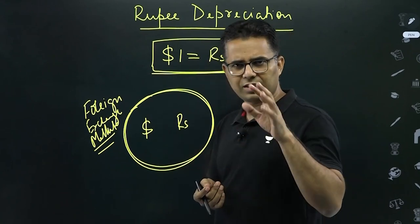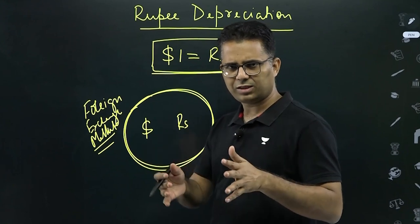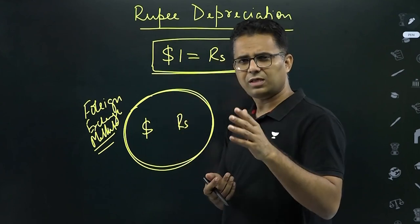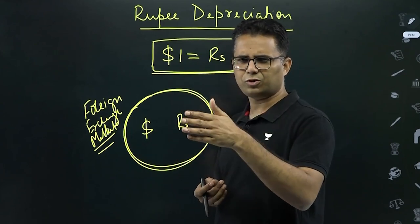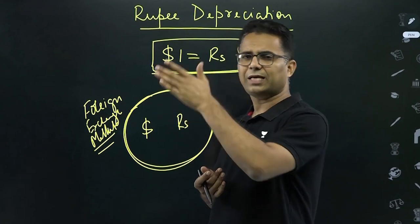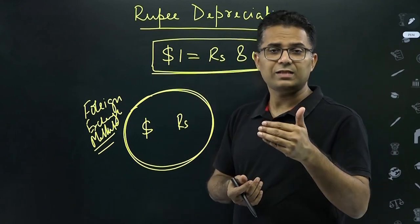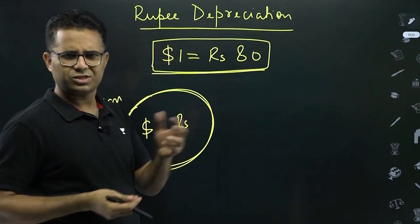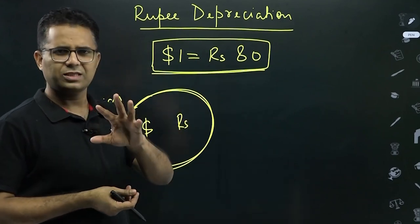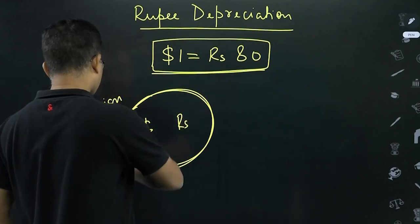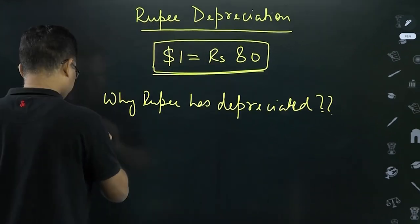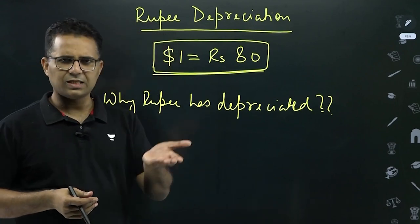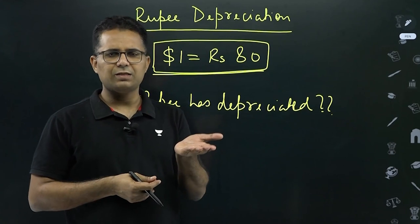Now let us see what were the reasons in the present context because of which rupee touched dollar 1 equal to rupees 80. When we got independence, it was around dollar 1 equal to rupees 2 or 3. So from rupees 2-3, it has come down to 80 — rupee has basically lost value. The first reason is that the US Federal Bank has increased their interest rate.